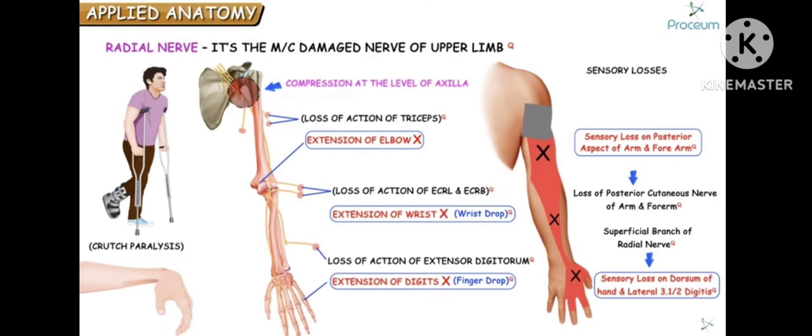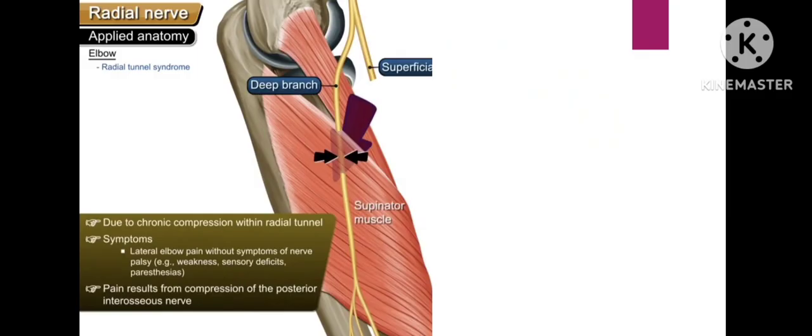Radial nerve injury results in abnormal sensations. Another condition is radial tunnel syndrome, where the radial tunnel is compressed.